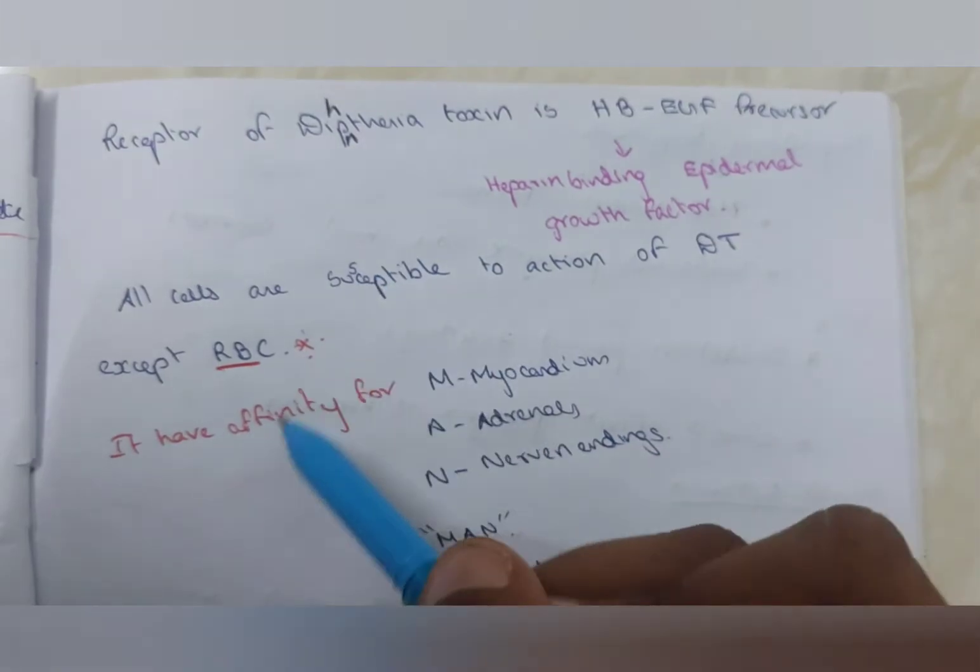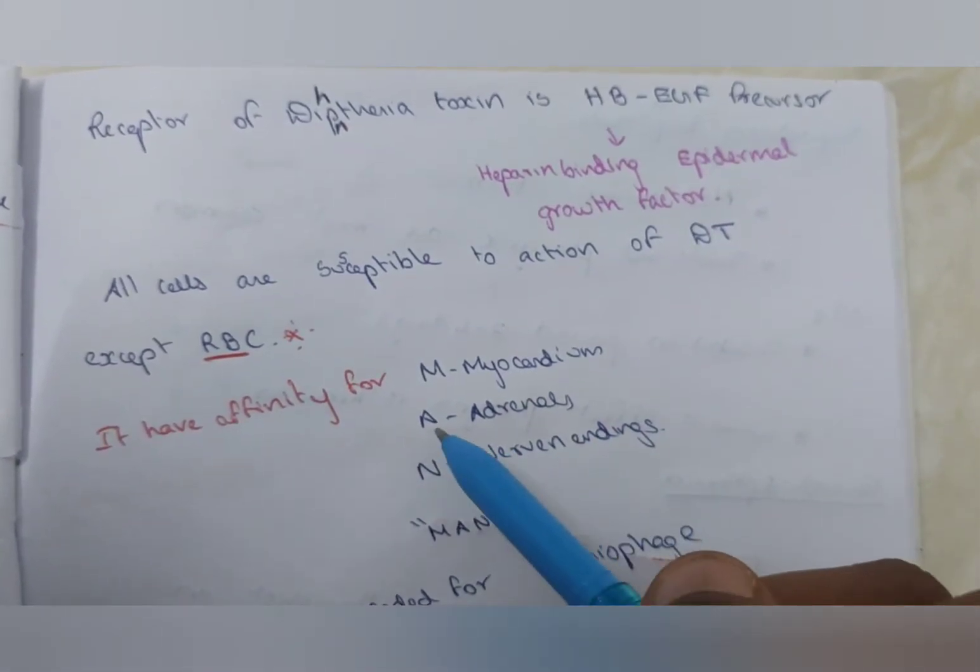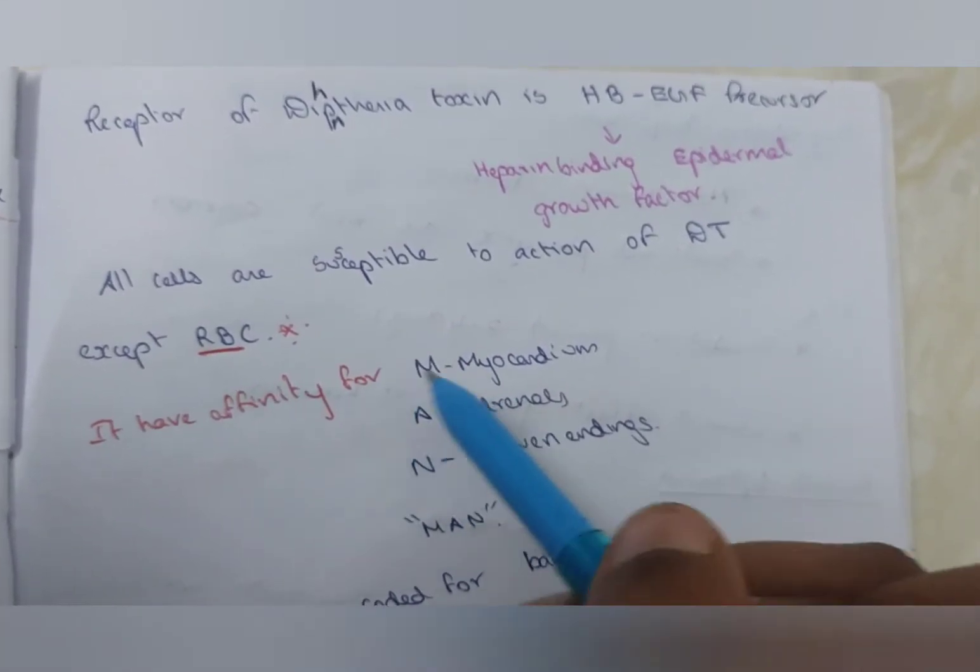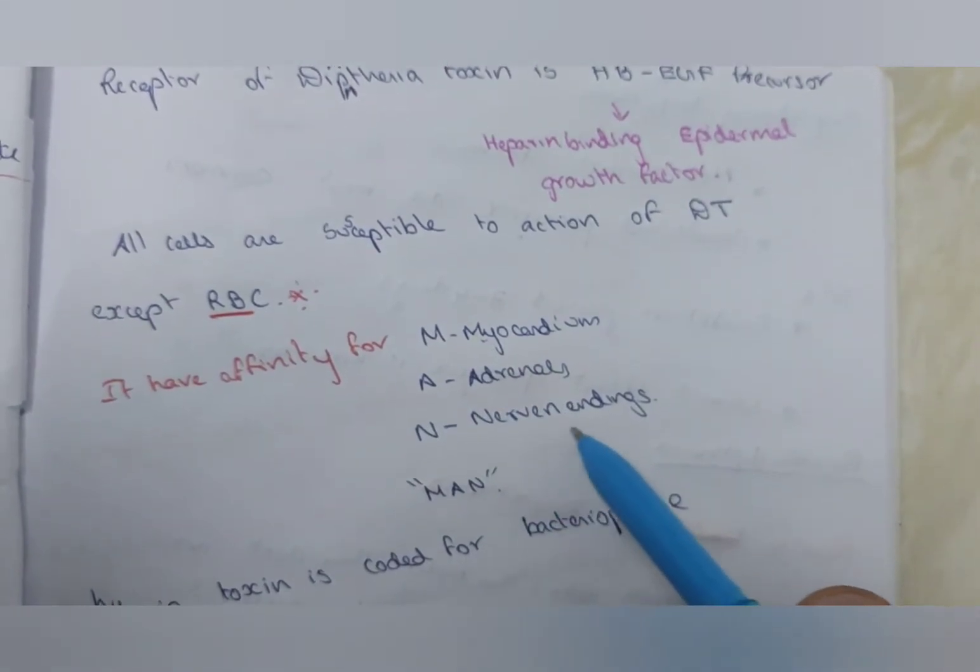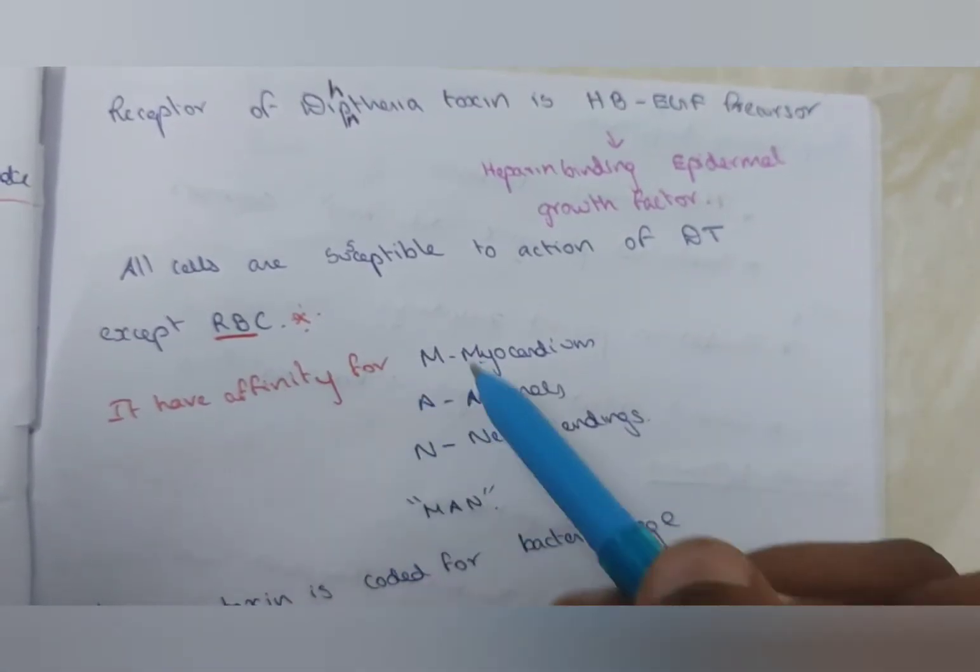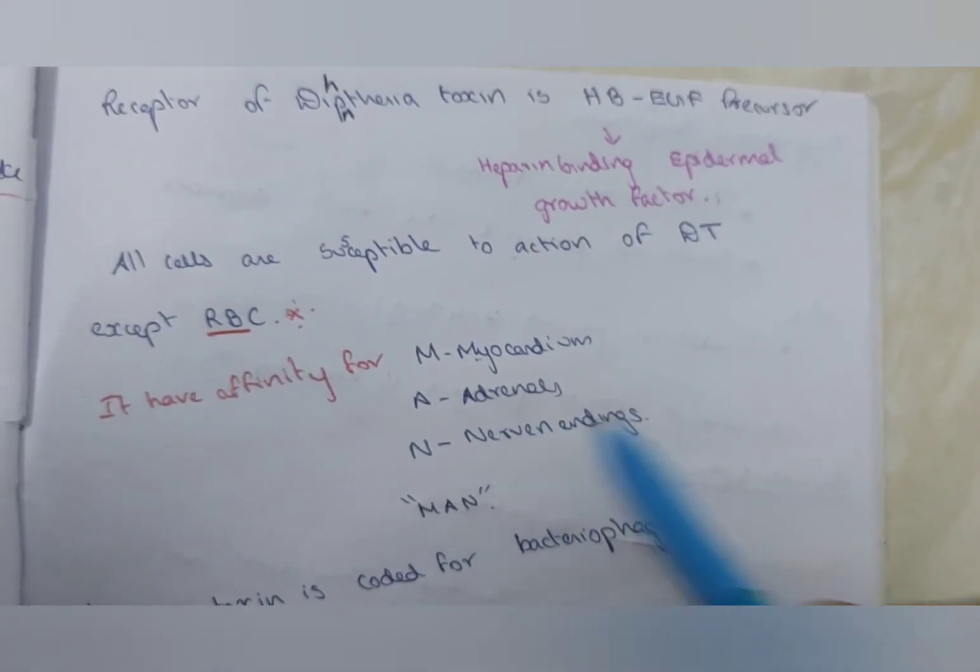The diphtheria toxin has more affinity to myocardium, adrenal and nerve endings. We can study this with a simple mnemonic MAN: M for myocardium, A for adrenal, N for nerve endings. This diphtheria toxin has more affinity towards this MAN, which is myocardium, adrenal and nerve endings.